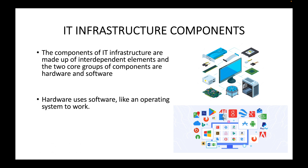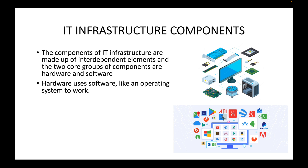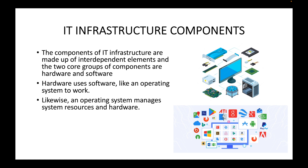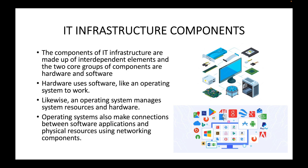Hardware uses software like an operating system to work — such as your Windows, Linux, or macOS operating system. Once assembly is done, we install an operating system on top of the hardware and start using it. An operating system manages system resources and hardware; without it we cannot work with the hardware. Once installed, the OS manages resources like your CPU, RAM, and hard disk.